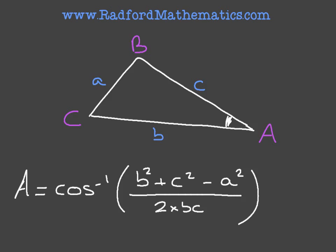Let's try and understand what this formula is actually telling us. The angle we're looking for is the interior angle at A. Relative to A, the side lengths b and c are adjacent to that angle — in other words, they're right next to it. And angle A is opposite the side length a.